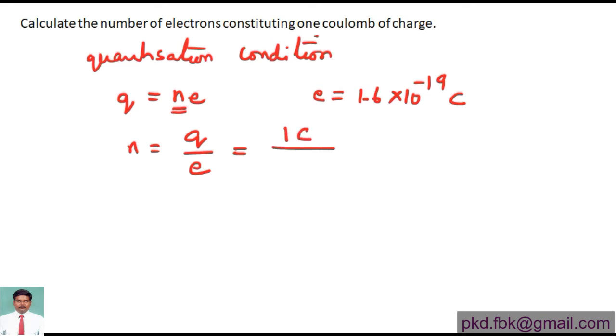Canceling the coulombs, we get 1 divided by 1.6 × 10^19 number of electrons. Computing 1 divided by 1.6, this equals 6.25 × 10^18 electrons.